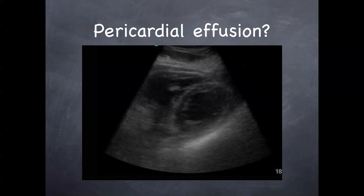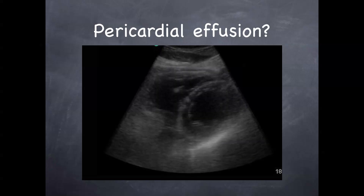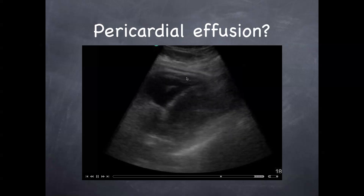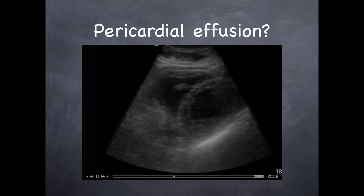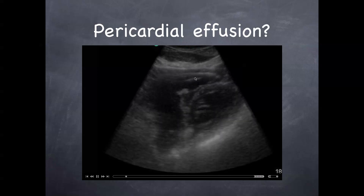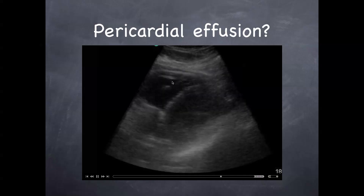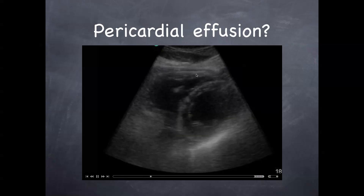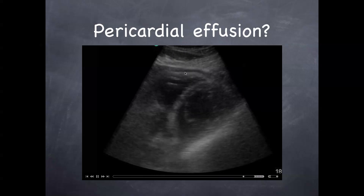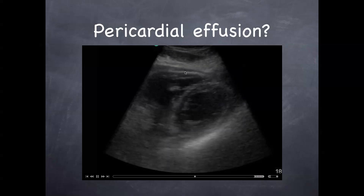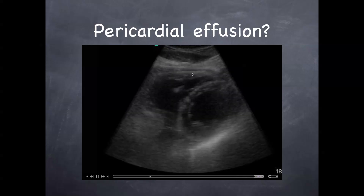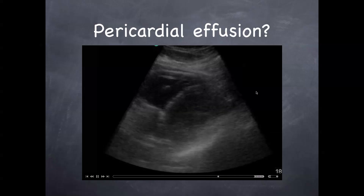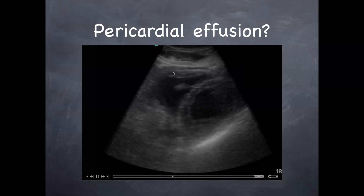It's important to differentiate between a pericardial effusion and what's called a fat pad. It can be tough, and as many as you look at, you're still going to see some where you're not sure. What makes me think of a fat pad is it almost looks like a starry sky appearance — it's hypoechoic — whereas a fat pad will be darker and more anechoic. The other thing is a fat pad seems to be stuck to the outside of the heart; with an effusion, it tends to have more versatility and movement. So hypoechoic around the heart: likely a fat pad. Dark anechoic: likely an effusion.